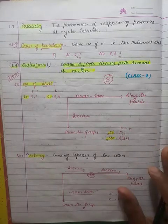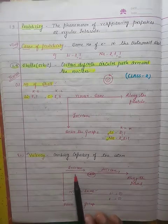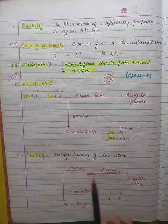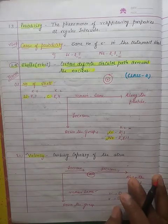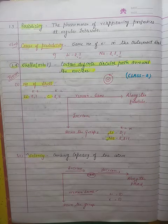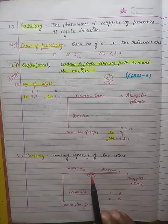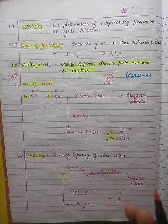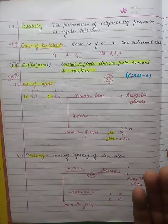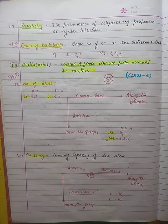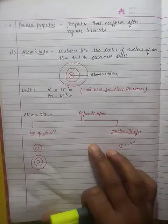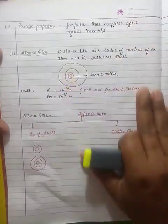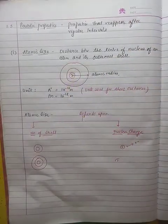As we go along the period, valency first increases then decreases. It increases up to group 14, then decreases after group 14. As we go along the period, the number of electrons in the valence shell increases and will reach 4 at group 14. After group 14, you minus the valence electrons from 8, so the valency starts decreasing. The knowledge of valency and number of shells will be used in the study of periodic properties.